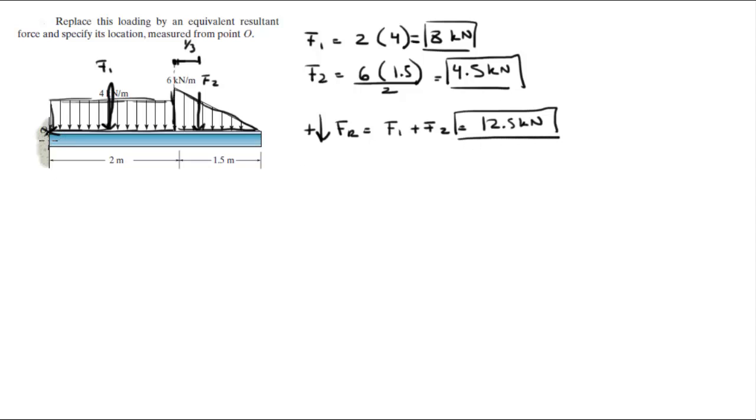Now you need to find the moment of O, and to do that you need to find the lever arms that are turning. So first you got this length: it's right at the half of the rectangle which has a length of 2 meters, so half of the rectangle will be 1 meter. And F2 will be the length of the rectangle plus one-third of the length of the triangle, which would make this distance 2.5 meters.